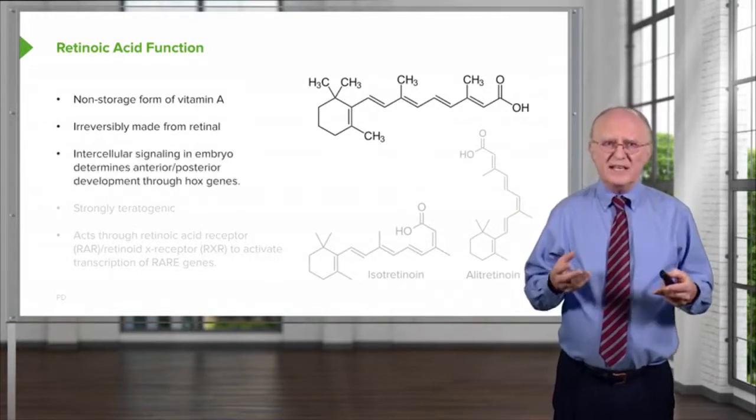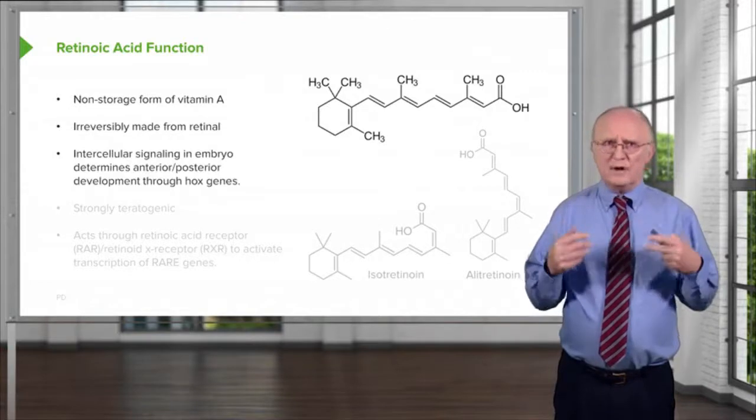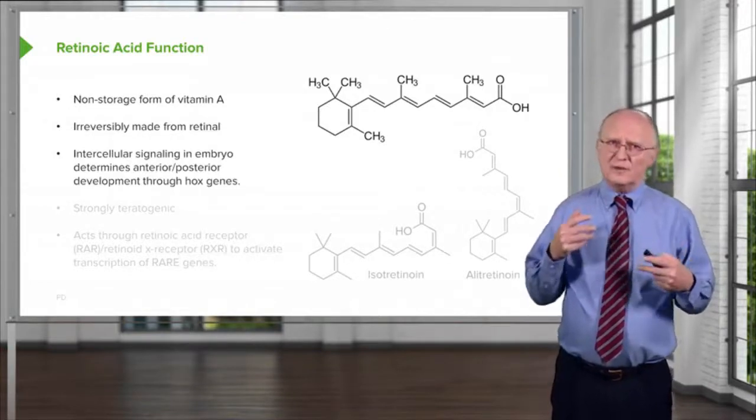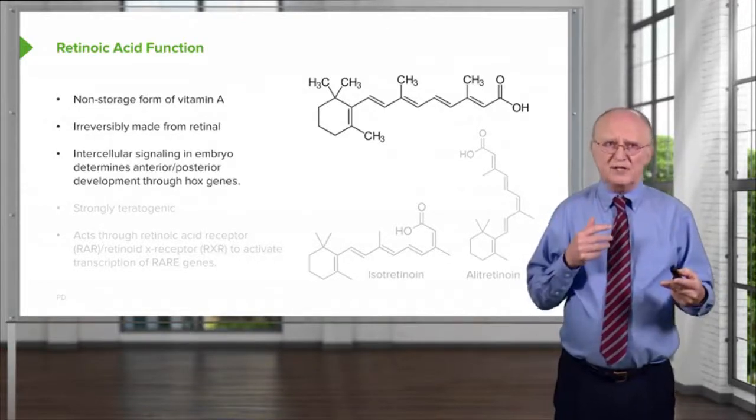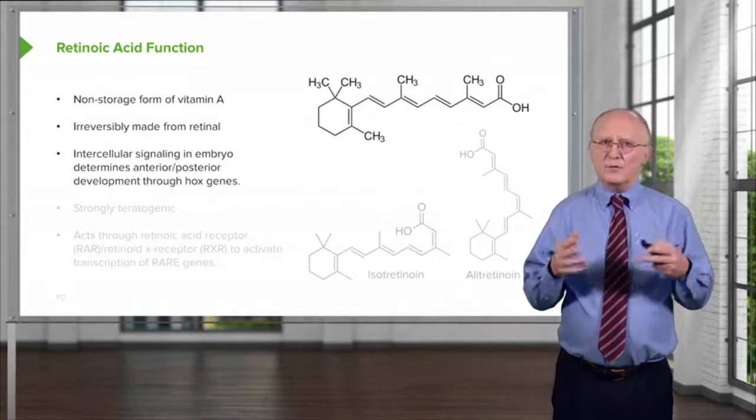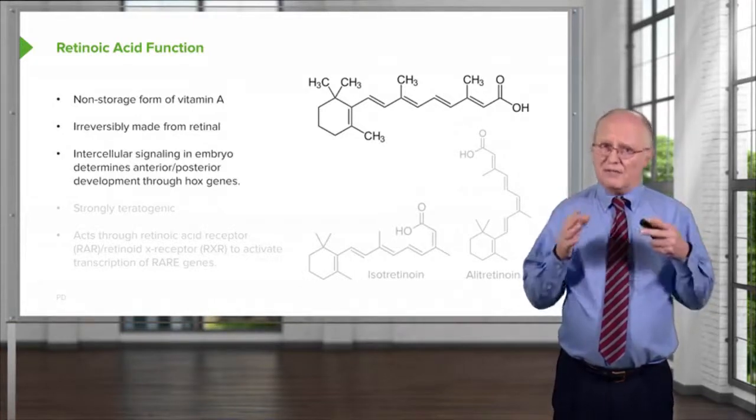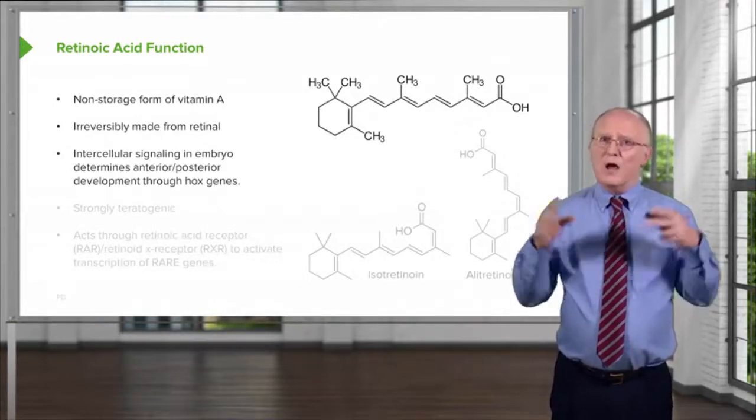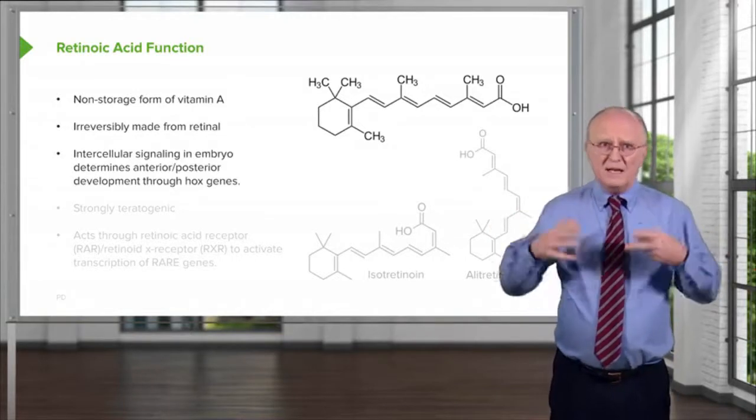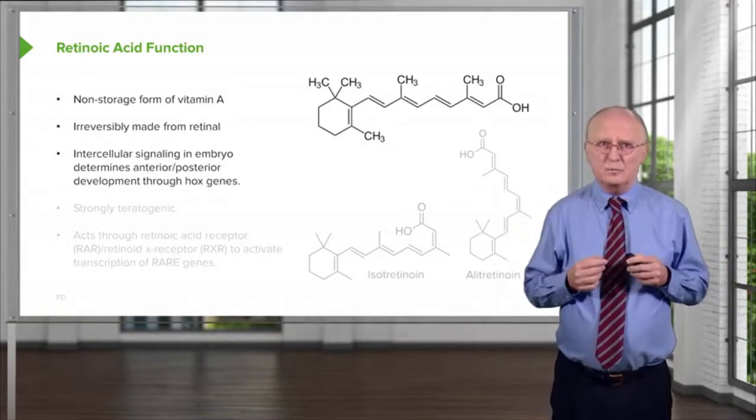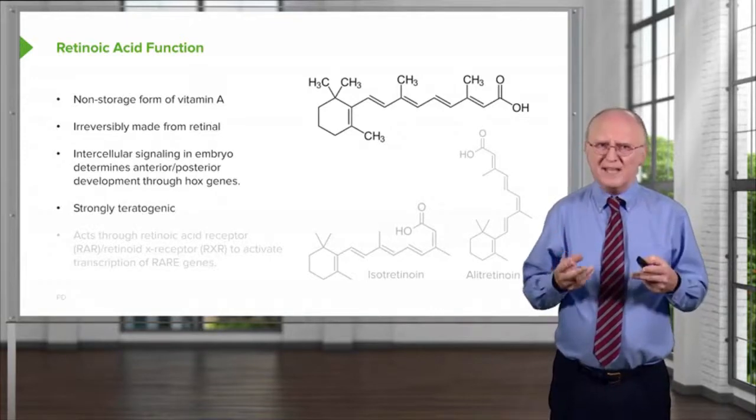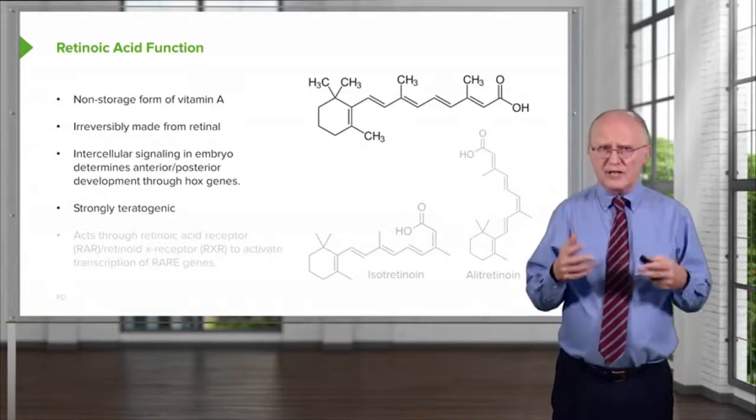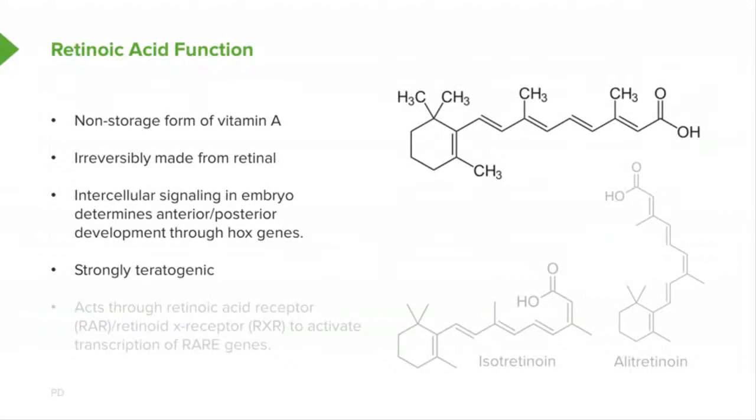The intracellular signaling system in the embryo uses retinoic acid as a way to determine the anterior and posterior region of the embryo for the development through Hox genes. Hox genes play very important roles during the development of organisms that have many different limbs and features as we do. Retinoic acid is therefore strongly teratogenic, meaning it strongly favors differentiation.